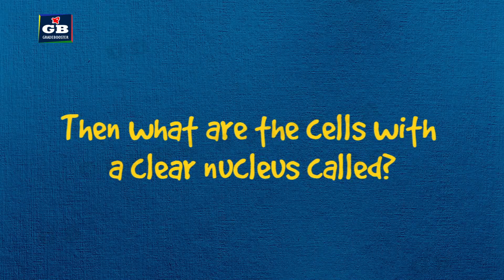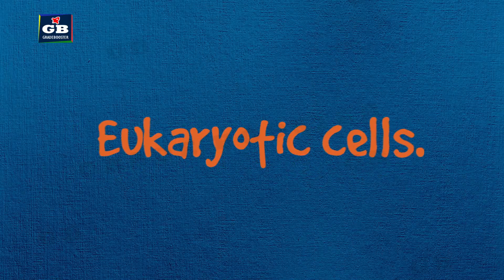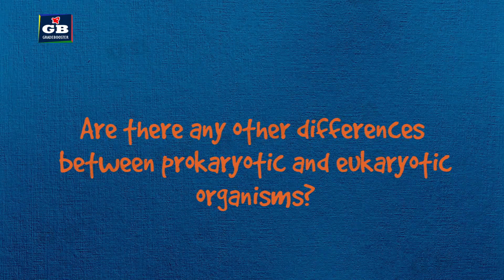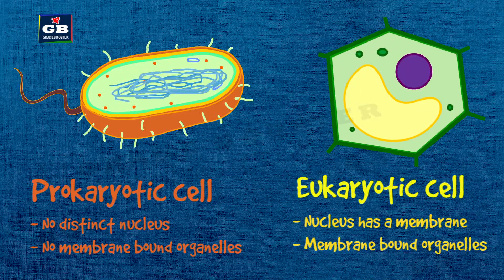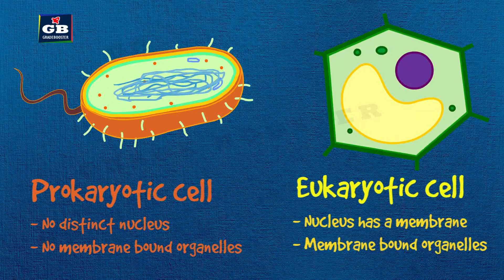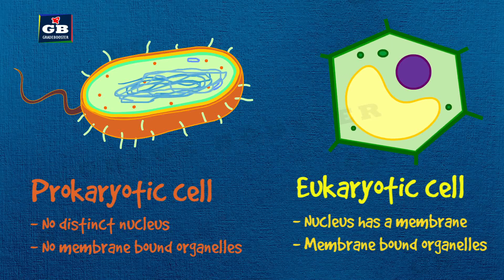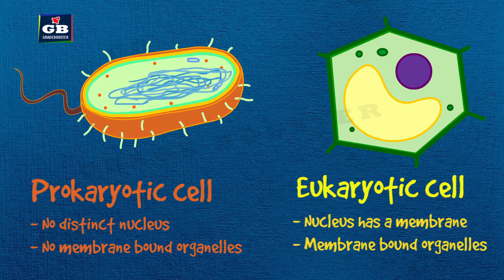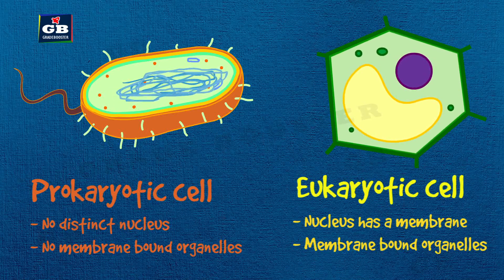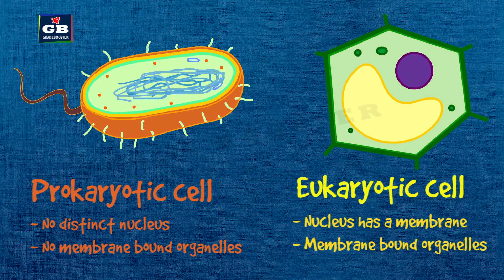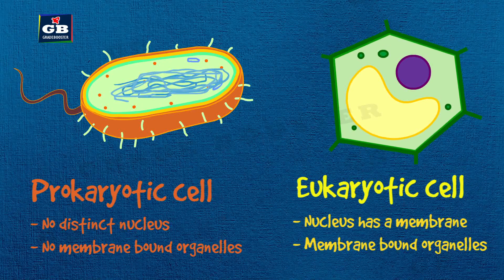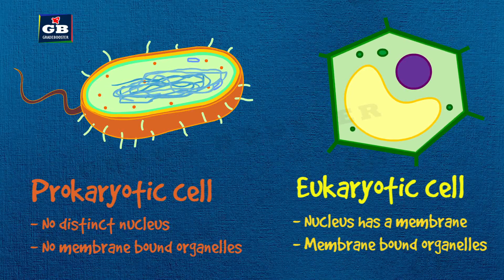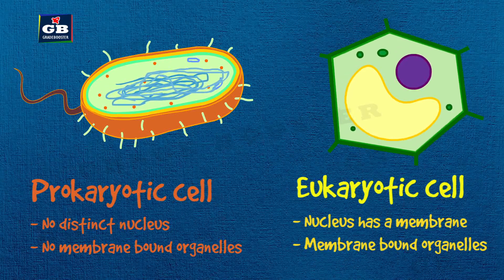Then what are the cells with a clear nucleus called? Eukaryotic cells. Are there any other differences between prokaryotic and eukaryotic organisms? In prokaryotes, beside the absence of a nuclear membrane, membrane-bound organelles are also absent. On the other hand, eukaryotic cells have a nuclear membrane as well as membrane-enclosed organelles. So prokaryotic organisms have poorly organized cell organelles compared to eukaryotic organisms.